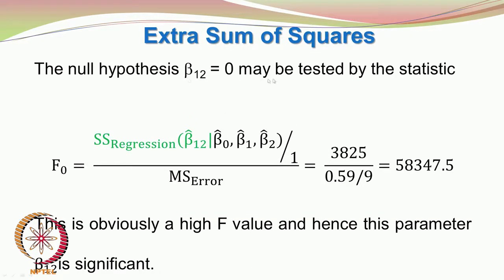The null hypothesis β₁₂ = 0 may be tested by F₀ = SS(β̂₁₂ | β̂₀, β̂₁, β̂₂) / 1 divided by the mean square error, which comes out to be 58347.5. This is obviously a very high F value, hence the parameter β₁₂ is significant. Please find the p value for this case corresponding to 1 and 9 degrees of freedom.